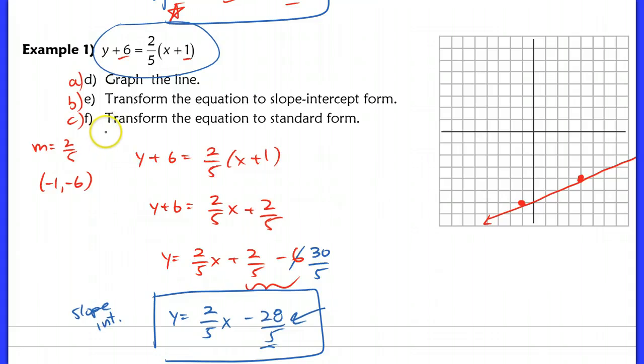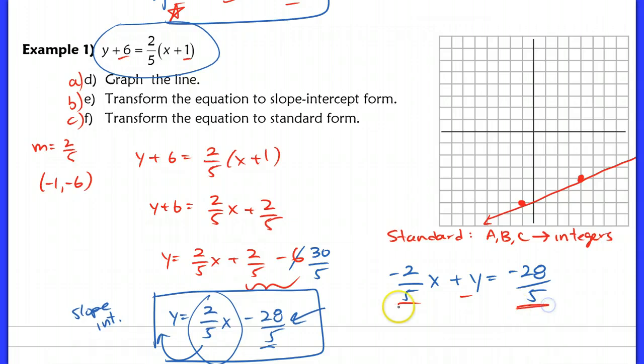Now the next part says transform the equation to standard form. So to transfer this equation, remember, all I need to do is get the x and the y on the same side. So I'm going to take that x, and I'm going to subtract it and move it to the other side. So now it becomes negative 2-fifths x plus y equaling negative 28-fifths. Now here is the problem with this. This is not quite in standard form because remember, standard form, if you remember from above, says I need a, b, and c, right, the coefficients here, and the constant to all be integers. Well, I have rational numbers. They're fractions, though, so they're not integers right now.